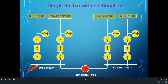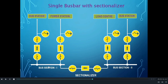After segregating the faulty part, the healthy part — Bus Section 2 — can operate normally. The feeders connected to Bus Section 2 will operate normally. A different category of Sectionalizer is also used in this type of Busbar Scheme.